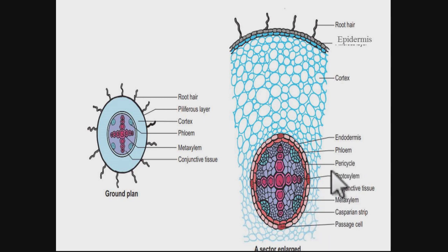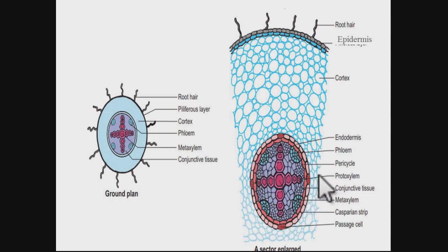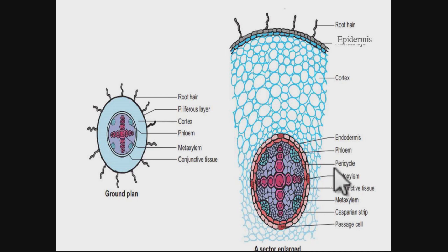The pericycle forms the boundary of the vascular cylinder. It is just below the endodermis and is generally a single layer in most roots, though in a few cases it is multilayered — for example in Salix alba. The main function of the pericycle in roots is to form lateral roots. In dicot roots where secondary growth occurs, the pericycle also functions to form the cork cambium.